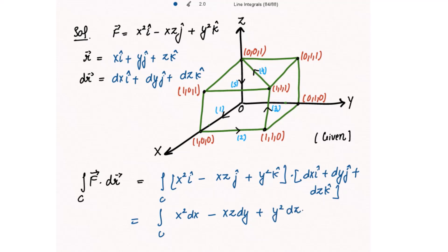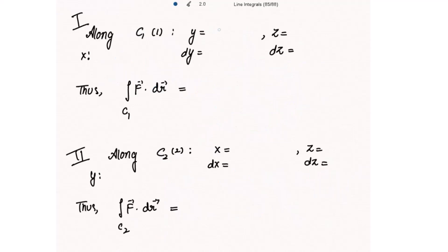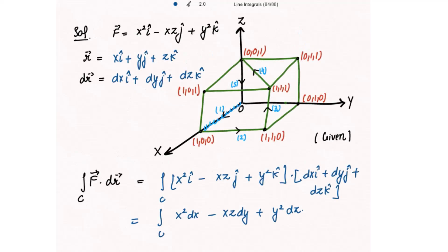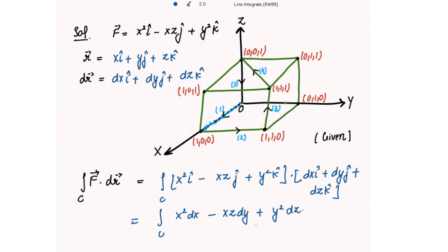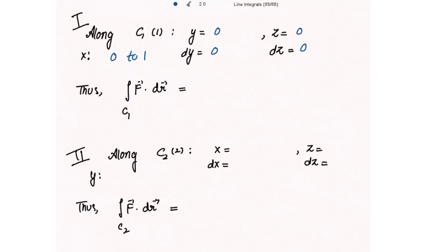Along path C1, which lies on the x-axis, y is zero and z is zero. Therefore dy is zero and dz is also zero, and x varies from zero to one. The integral reduces to x squared dx only. Integrating x squared dx from zero to one gives x cubed over three, evaluated from zero to one, which equals one over three.